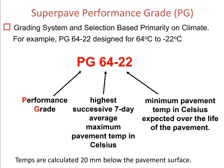The name of the grades starts with PG, which means performance graded, followed by two numbers representing the maximum and minimum pavement design temperatures in degrees Celsius. For example, an asphalt binder PG 64-22 means that the maximum pavement design temperature is 64°C and the minimum pavement design temperature is negative 22°C. So 64 represents the highest successive seven-day average maximum temperature in degrees Celsius, and negative 22 represents the minimum pavement design temperature expected over the entire life of the pavement.